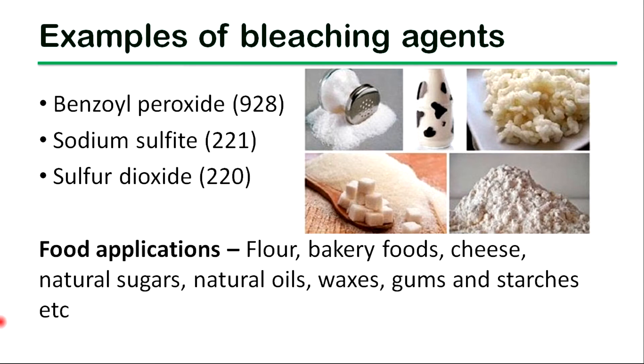Flour, bakery foods, cheese, natural sugars, natural oils, waxes, gums, and starches are examples of products that use bleaching agents.